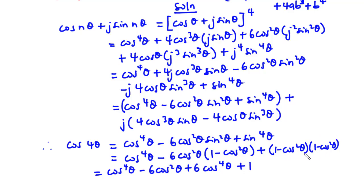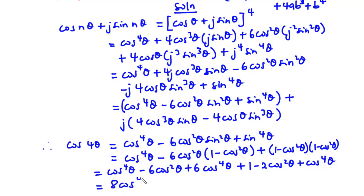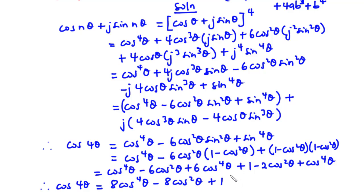Combining all terms: cos⁴θ + 6cos⁴θ + cos⁴θ = 8cos⁴θ; and −6cos²θ − 2cos²θ = −8cos²θ; plus the constant +1. Therefore, cos(4θ) = 8cos⁴θ − 8cos²θ + 1, hence the proof.